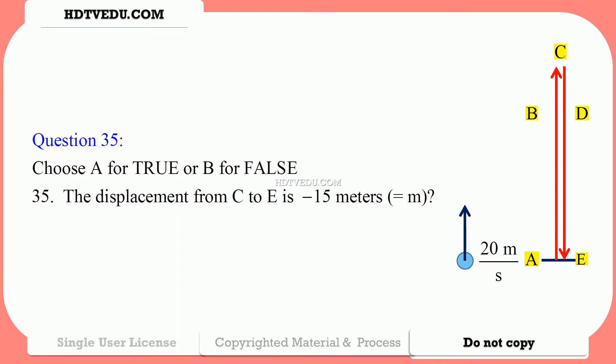The displacement from C to E is negative 15 meters. Are you ready for the answers? Let's review question number 35: displacement from C to E is negative 15.